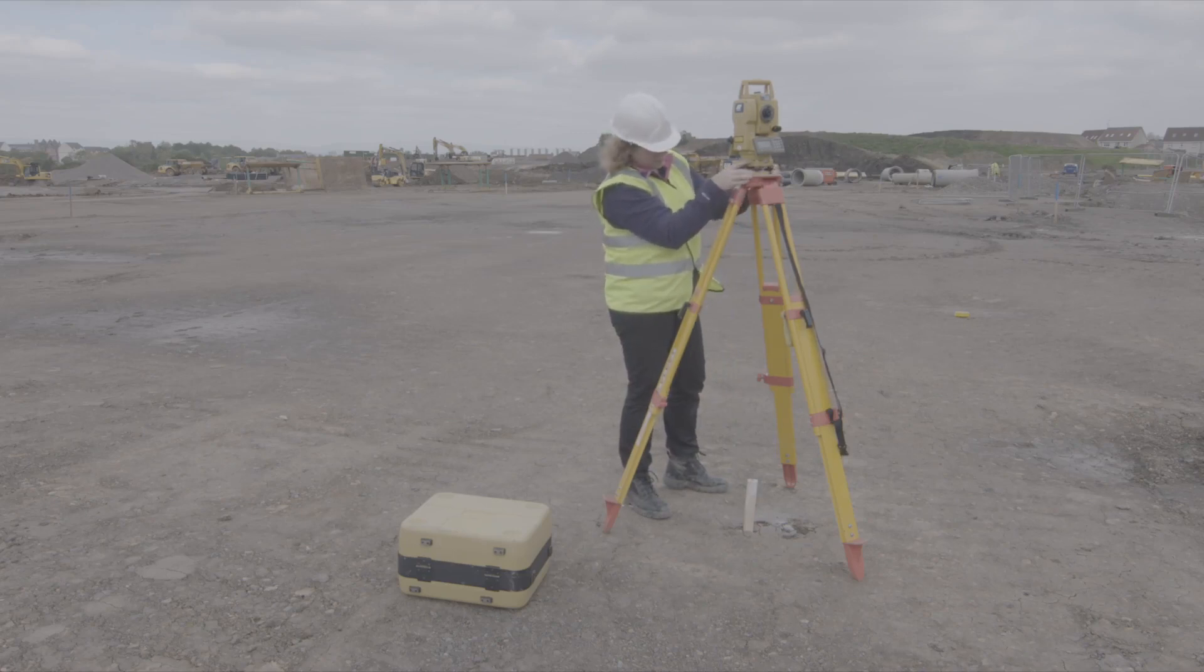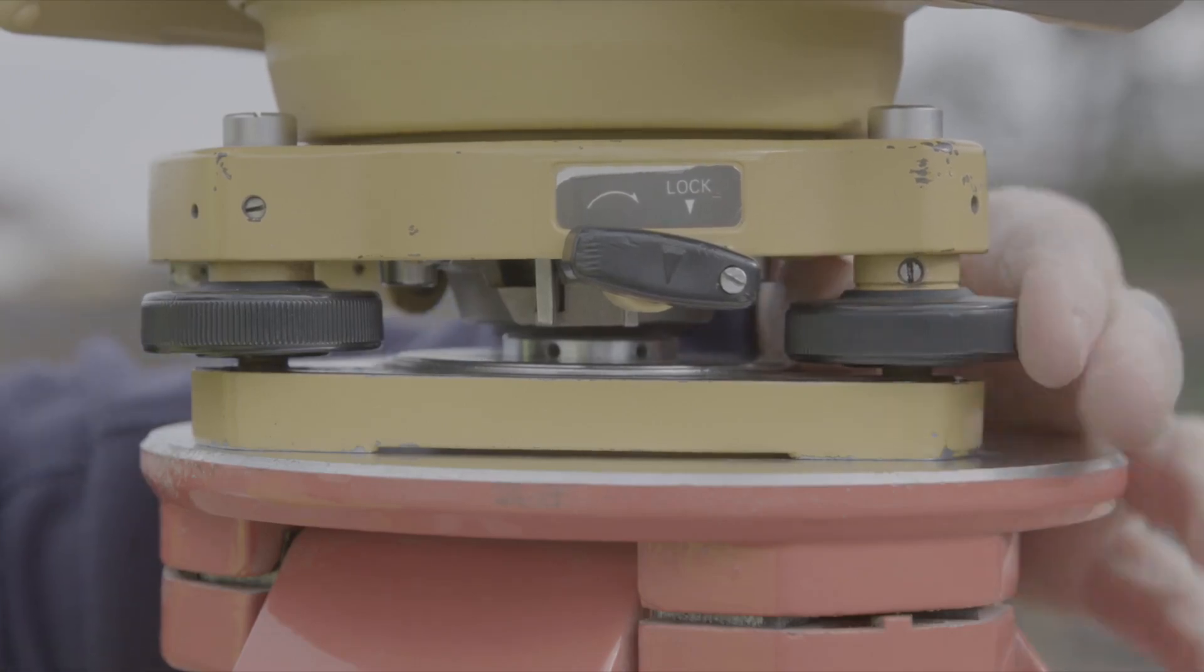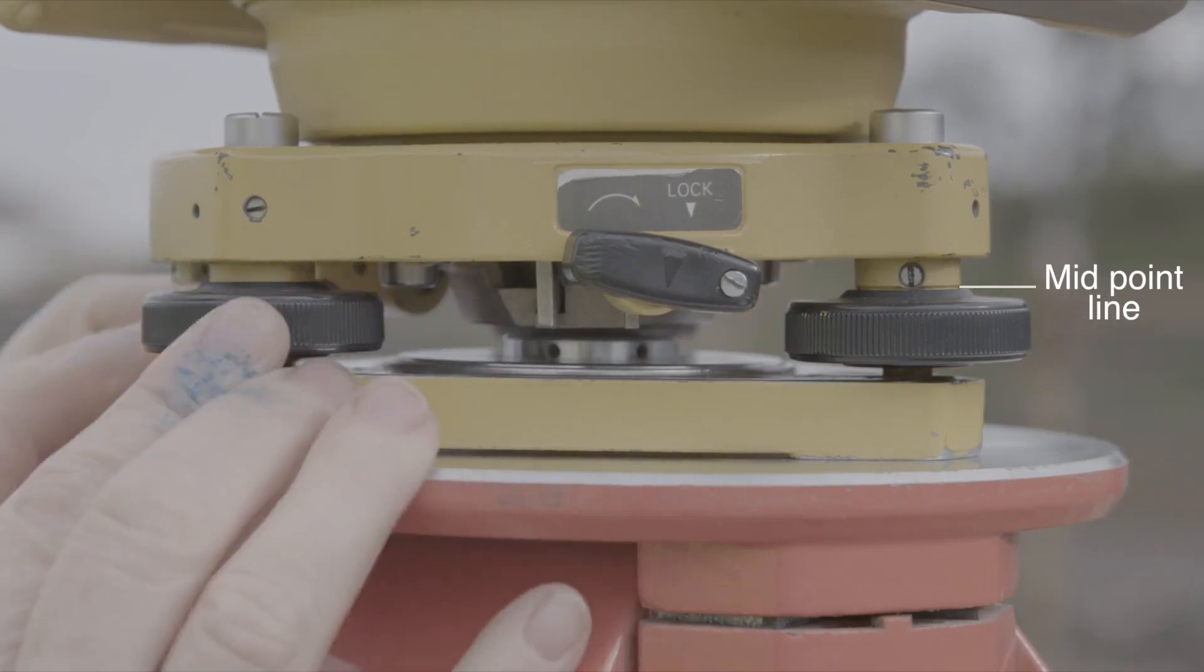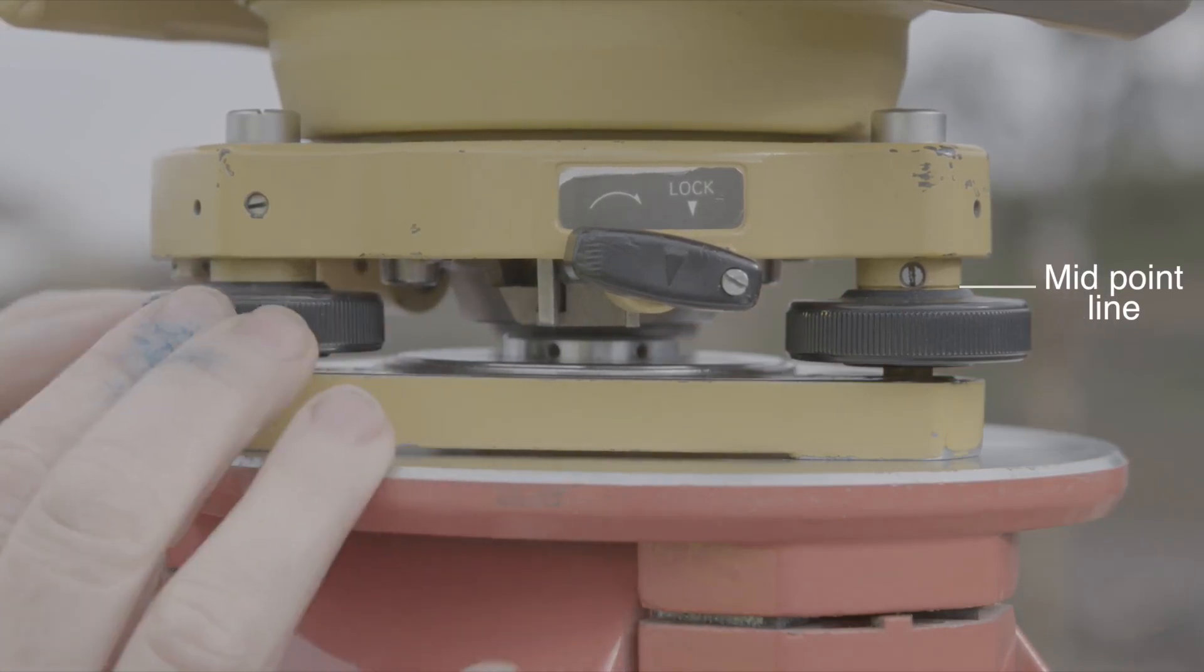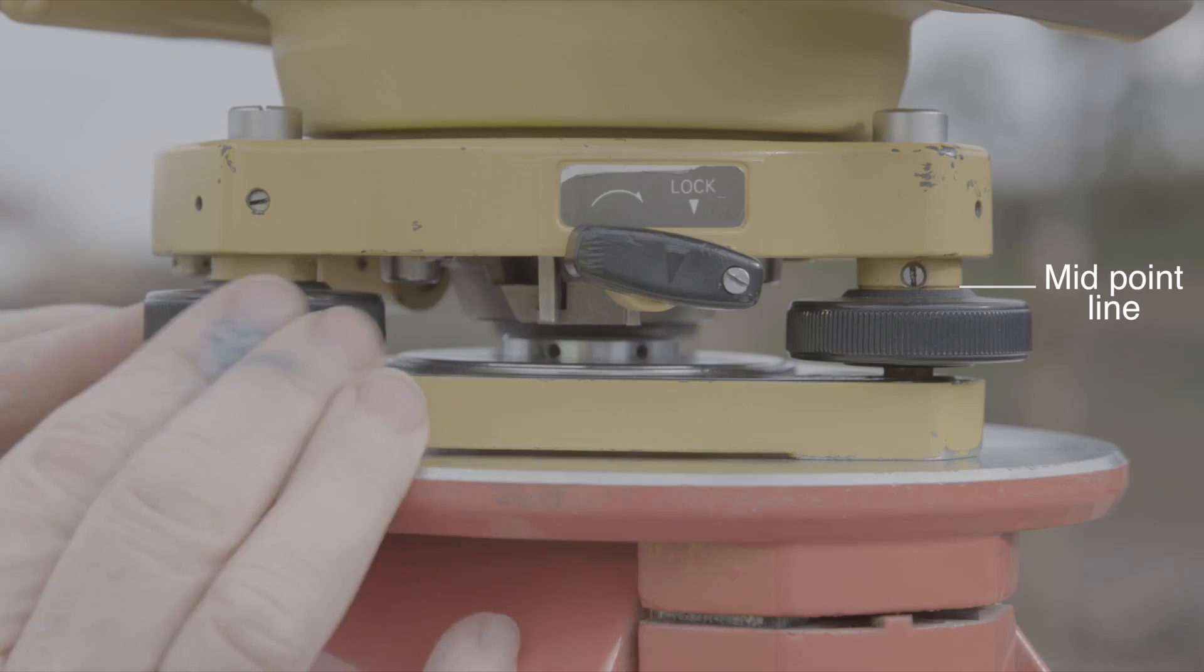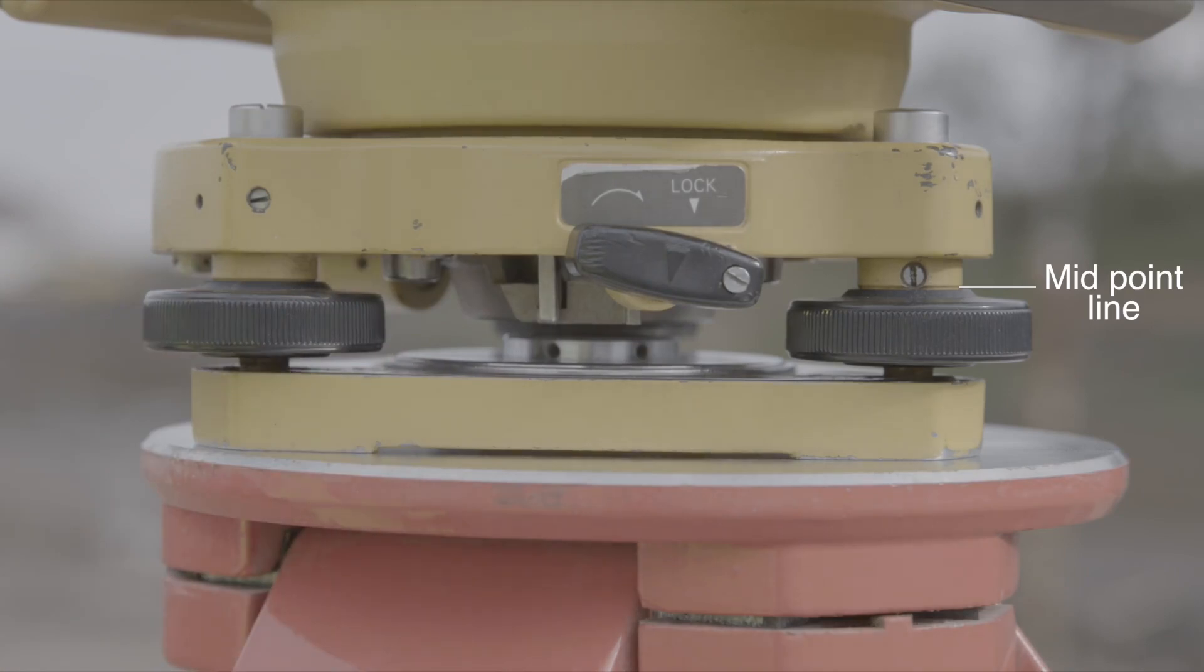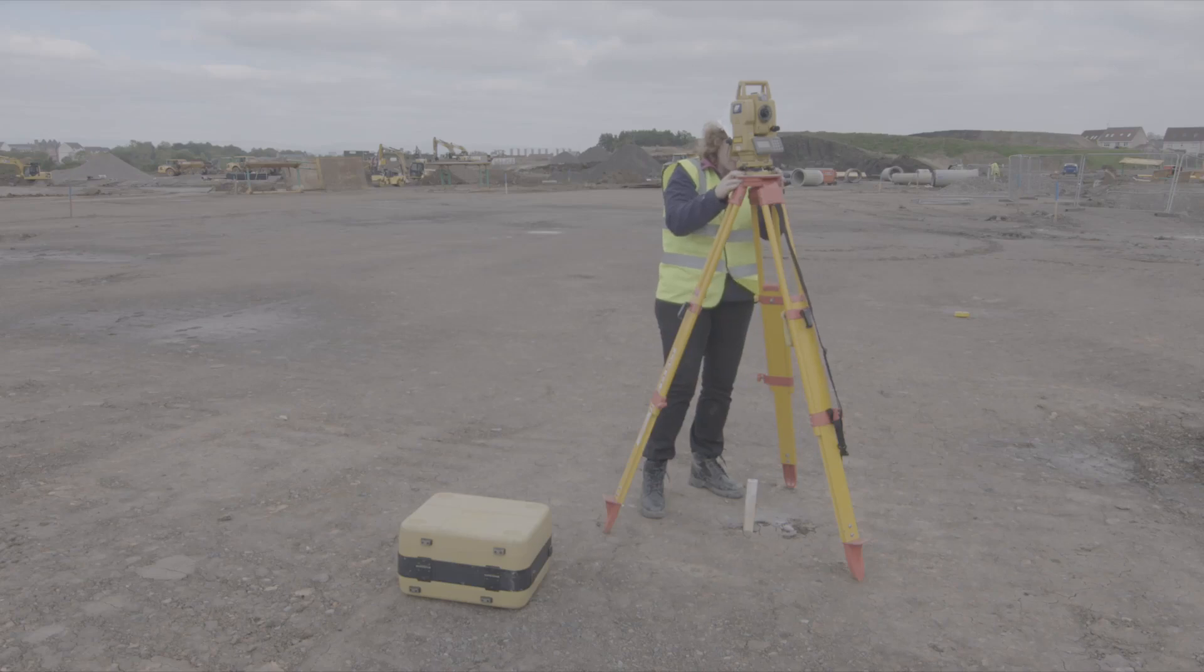The first thing you need to do once the total station's attached is set the foot screws to their midpoint. So you'll notice on each of the legs there's a line which marks the midpoint of the foot screw. We're going to set each of the foot screws so the top of the foot screw is touching that line. And that means you've got the maximum travel in each direction, up or down, when you come to adjust the level and the position of the total station.